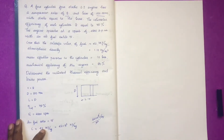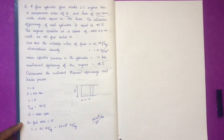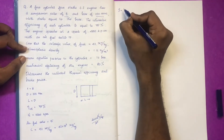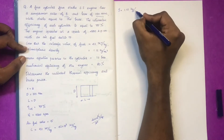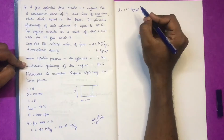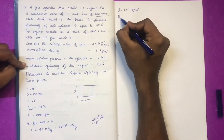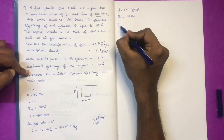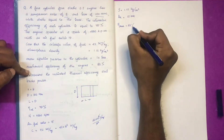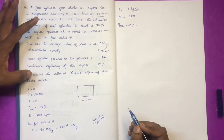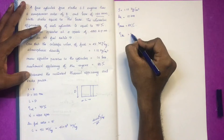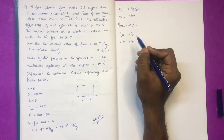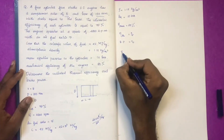The atmospheric air density, rho, is equal to 1.12 kg/m³. The indicated mean effective pressure, P_im, is equal to 10 bar. The mechanical efficiency of the engine is equal to 80%. We have to find: indicator thermal efficiency and brake power.